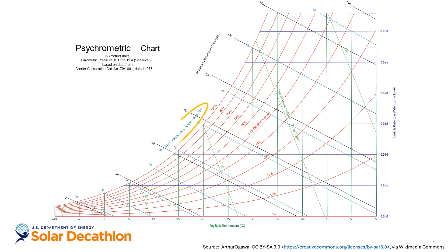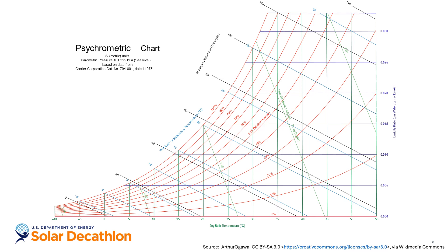The next term is the wet bulb temperature, shown as diagonal blue lines. Think of wet bulb temperature as an expression of how cool the air can become through evaporative cooling. It's determined by wrapping a thermometer's bulb in a wet cloth and measuring the temperature as water evaporates from the cloth. When water evaporates, it absorbs heat energy from the surrounding air, causing a cooling effect. When the difference between dry bulb and wet bulb temperature is large, it means water is evaporating quickly and the surrounding air is drier — lower humidity.